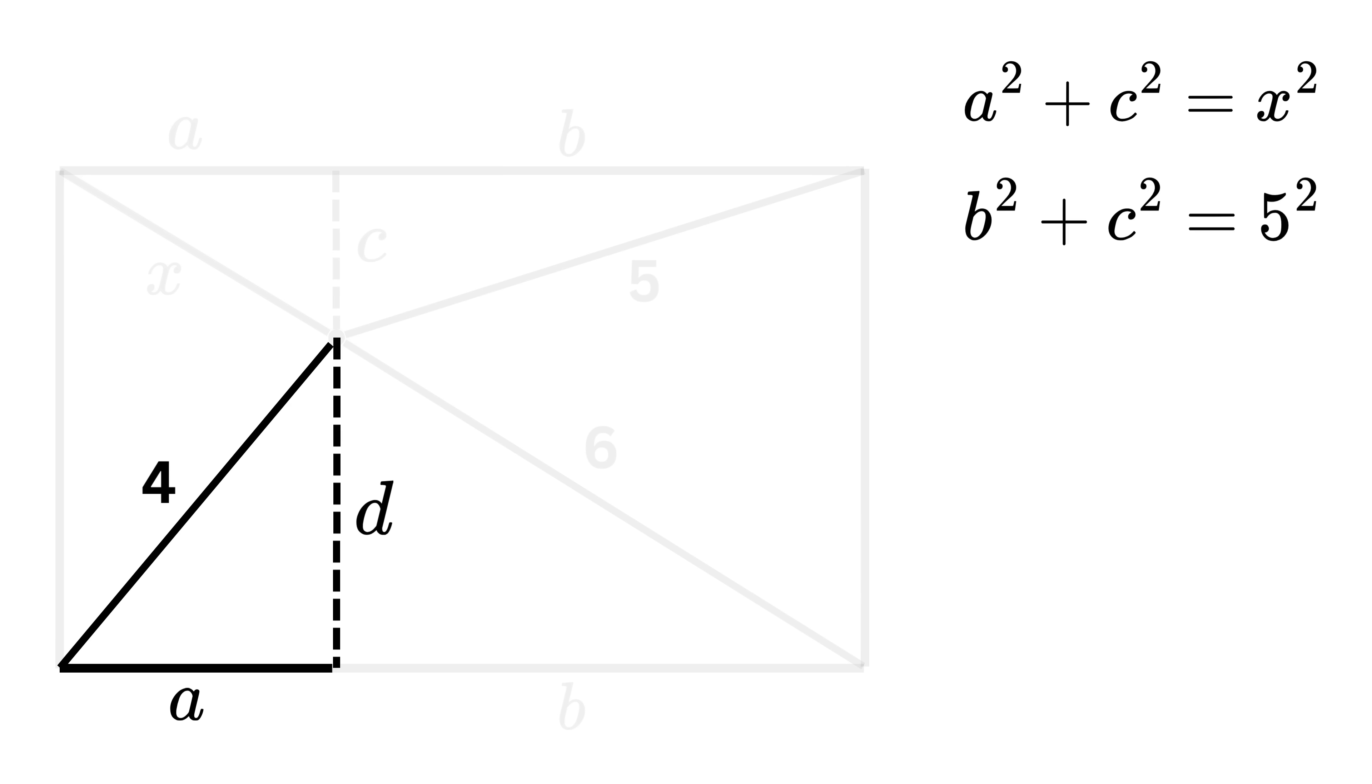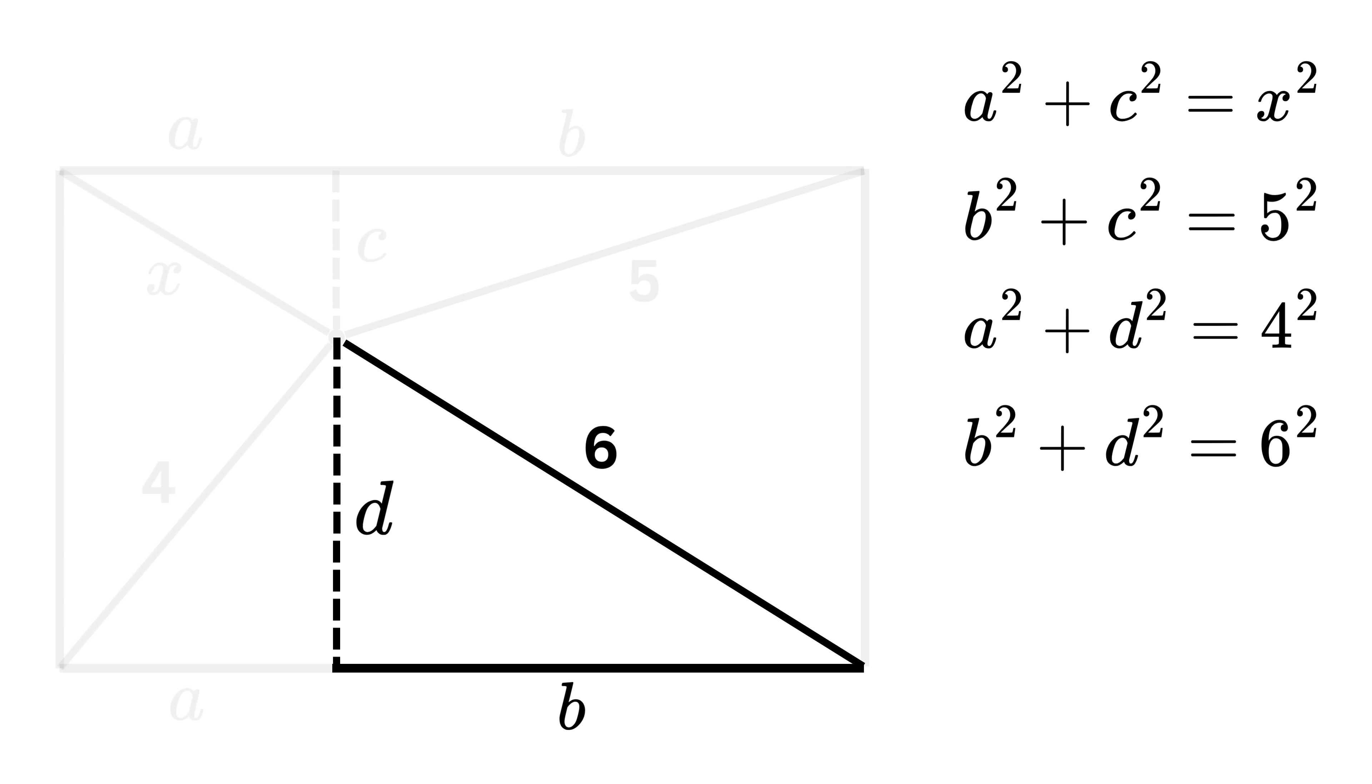Similarly, for this bottom left right triangle, we get A square plus D square is equal to 4 square. And for this bottom right right triangle, we get B square plus D square is equal to 6 square.